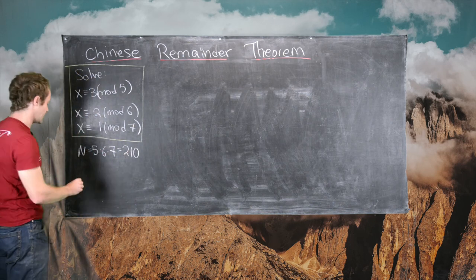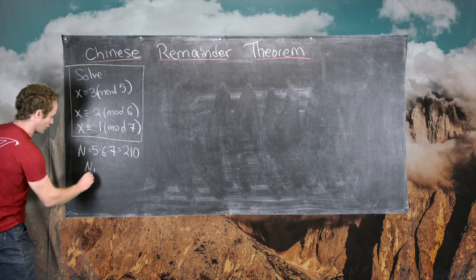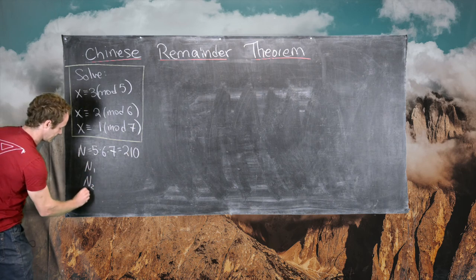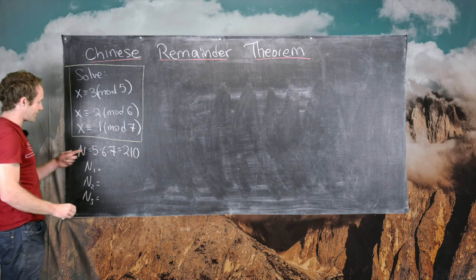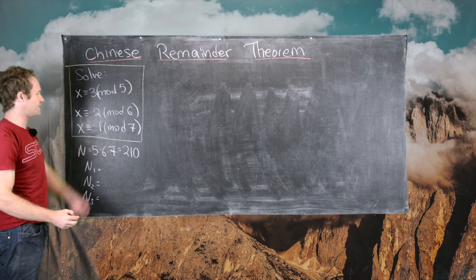And then the next thing we need are these capital N1, capital N2, and capital N3. And so if capital N is the product of all three of these, capital N1 is the product of the last two leaving out the first.